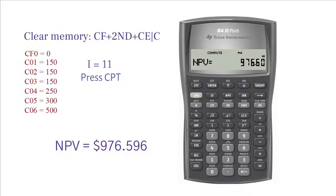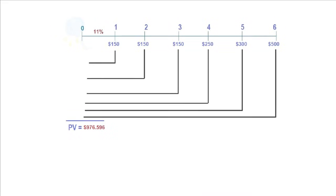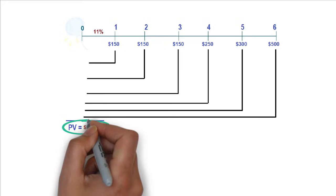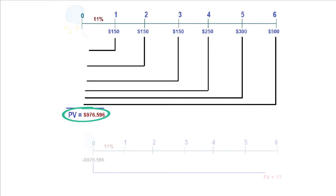If you want to calculate the future value of the same uneven cash flows, you first calculate the present value the way you did so far and then use that number to calculate the future value. For example, if we put the previously calculated present value of 976.596 in a timeline, it will look like this.